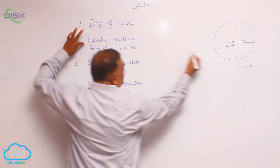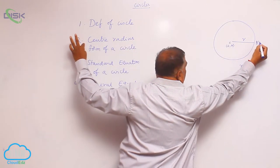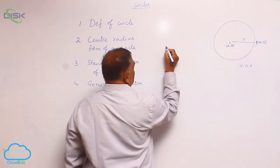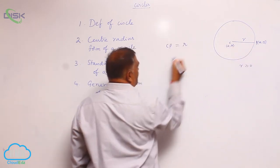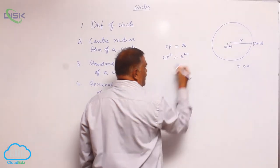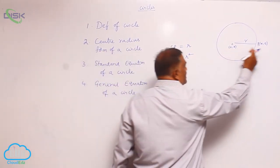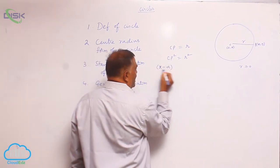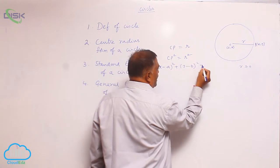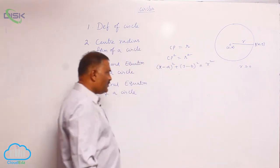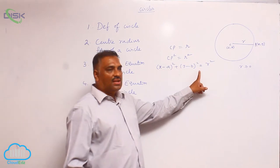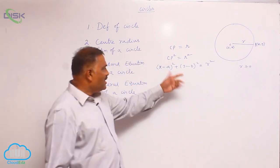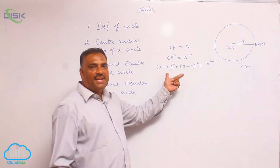Let us take a point P(x, y). We know that CP is the radius, so CP = r, which means CP² = r². CP is nothing but the distance between two points, that is: (x − a)² + (y − b)² = r². This is an equation which involves the center as well as the radius, that is why it is called the center-radius form of a circle.